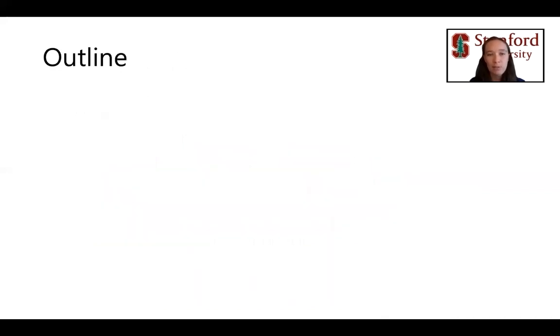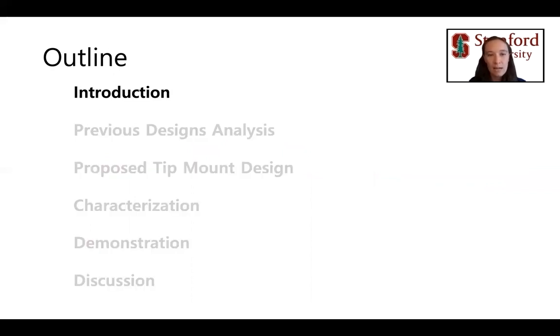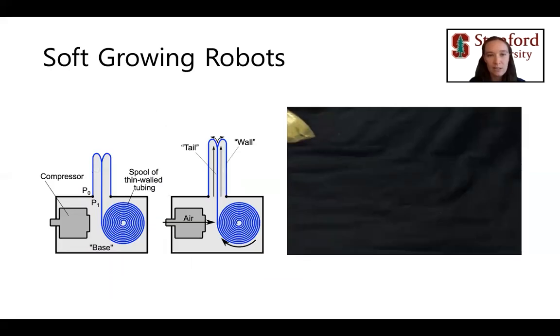In this presentation, we will introduce soft-growing robots and the problem of mounting to the robot tip. Then we will analyze the previous tip mount designs. Next, we will present our new tip mount design and discuss its characterization as well as its demonstration for an object retrieval and delivery task. Finally, we will discuss the limitations of our tip mount design and how they could be improved.